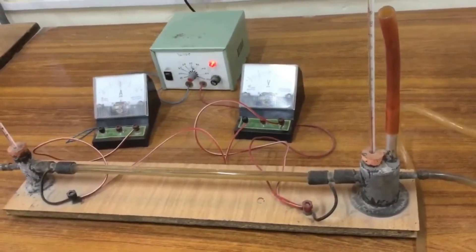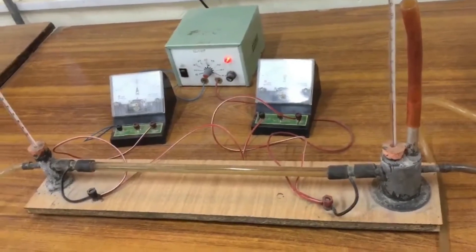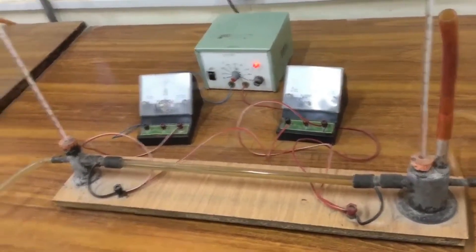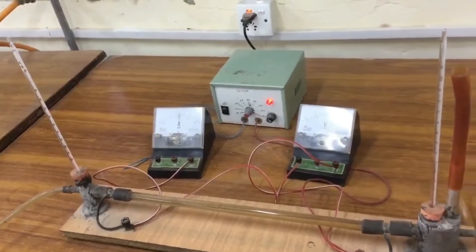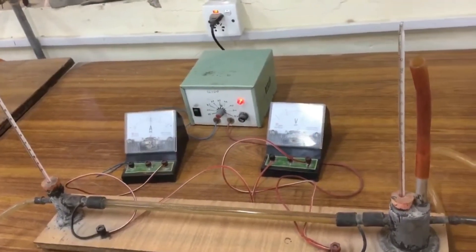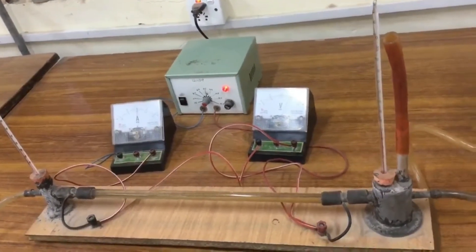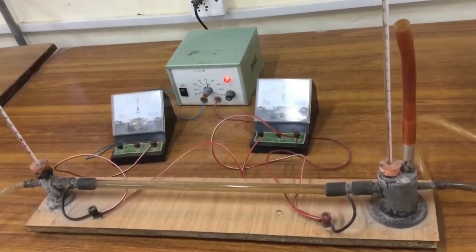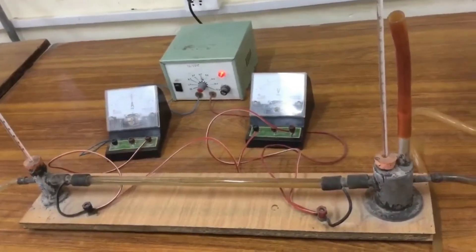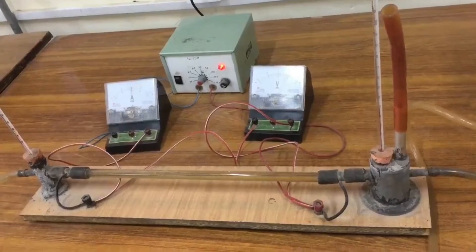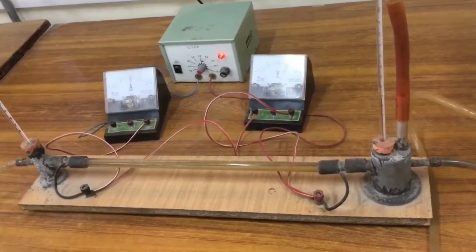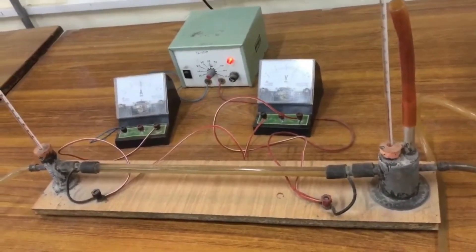Thermometer placed at the inlet will show you the temperature of the inlet and the thermometer placed at the outlet will show you the increased temperature of the outlet. Because when the current is flowing through the coil due to resistance, it will heat up and the water that is flowing through the tube will also be heated. And so you will get a temperature difference that you have to put in the values and calculate the Joules constant.